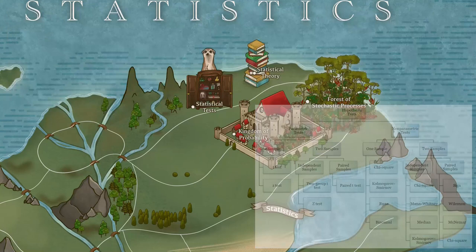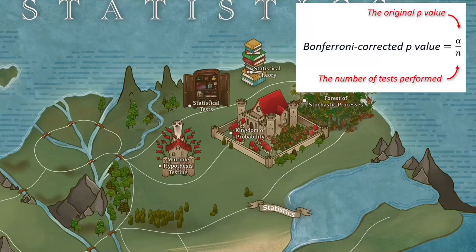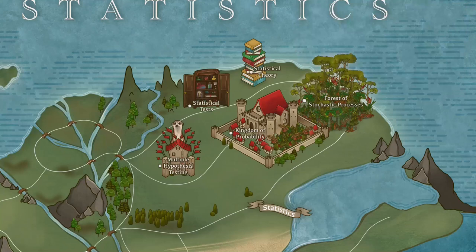Non-parametric tests do not make those assumptions, but in turn can be less powerful. When testing for many things, some difficulties arise — mainly the probability of making an error discovery grows bigger. Multiple hypothesis testing concerns with how to fix that. Old methods, such as the Bonferroni correction, can be too strict and they control the family-wise error rate. Modern methods control for the false discovery rate and include Benjamini-Hochberg and knock-offs.